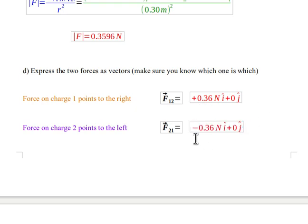And then we've got minus 0.36 Newtons i-hat plus 0 j-hat for the force which points to the left. This is consistent with the i-j notation that we've been using starting from physics 1.